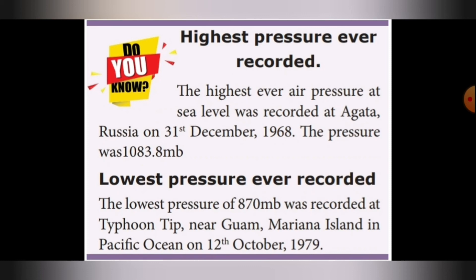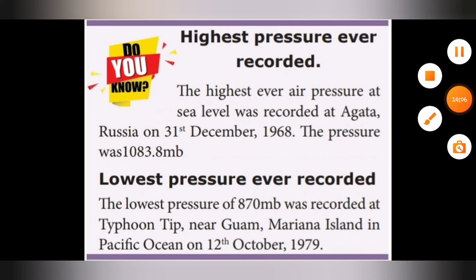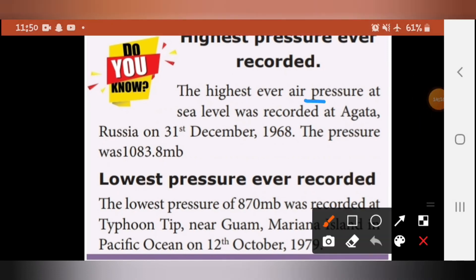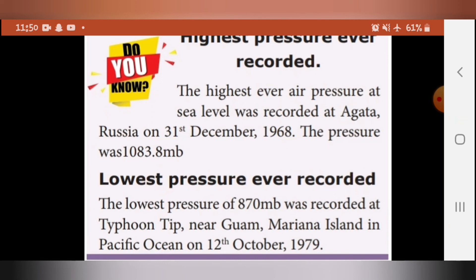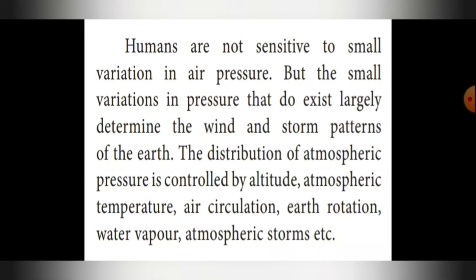The highest ever air pressure at sea level was recorded at Agata, Russia, on 31st December 1968, at 1083.8 MB. The lowest pressure of 870 MB was recorded at Typhoon Tip near Guam, Mariana Island, in the Pacific Ocean on 12th October 1979. Humans are not sensitive to small variations in air pressure, but these variations largely determine the wind and storm patterns of the earth. The distribution of atmospheric pressure is controlled by altitude, atmospheric temperature, air circulation, earth rotation, water vapor, and atmospheric storms.